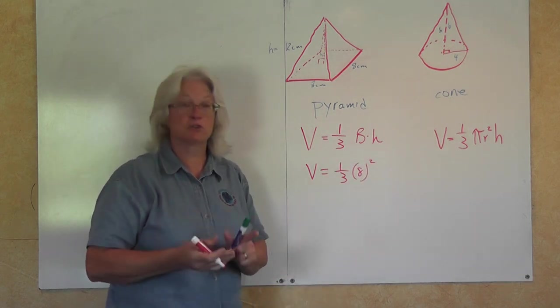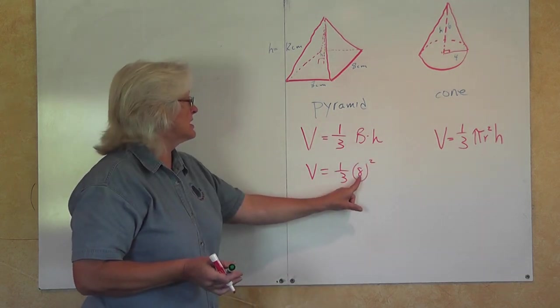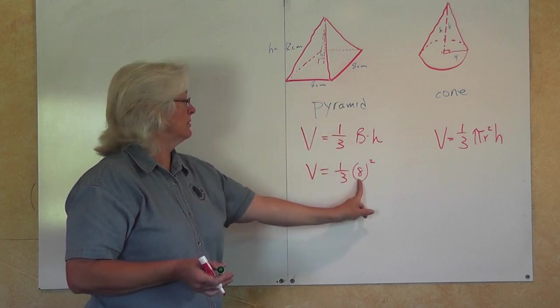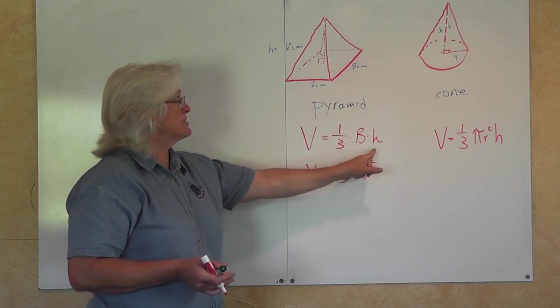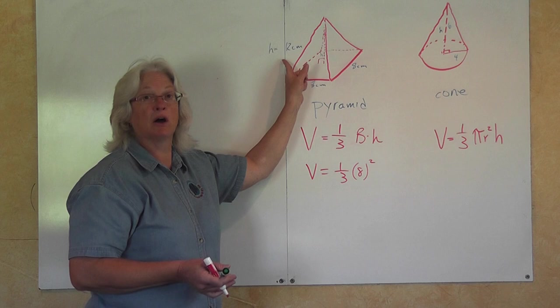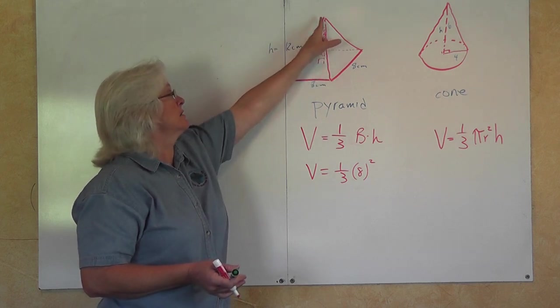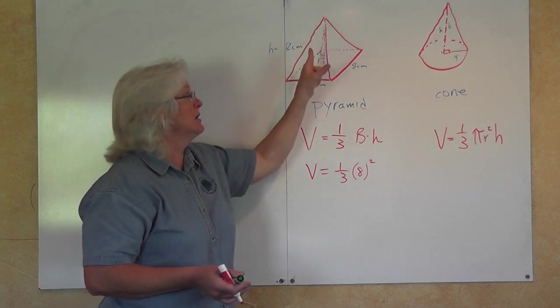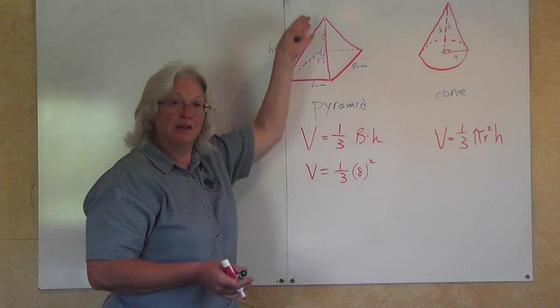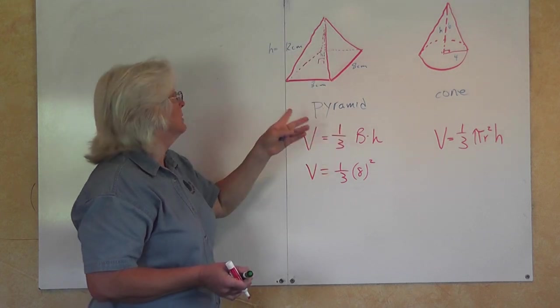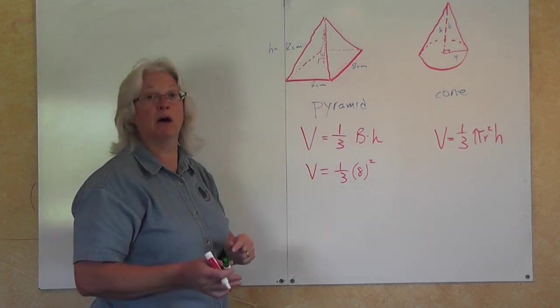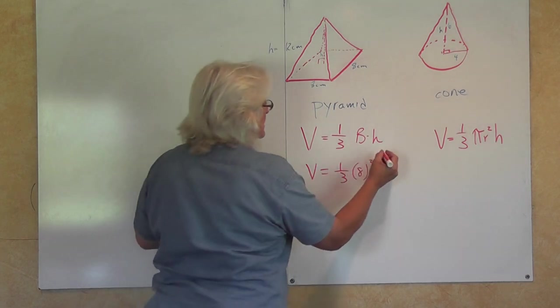Remember the area of a square is the side squared times the height. And right here it says our height is 12 centimeters. The height goes from the point of the pyramid perpendicularly down to the base, and we have that that height is 12 centimeters.